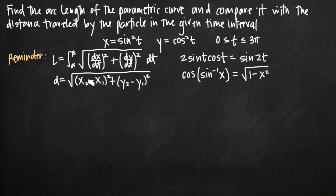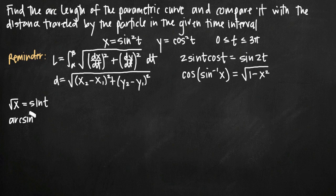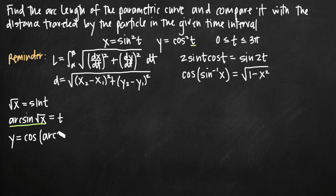To find the distance traveled by the particle, first we'll eliminate the parameter. We'll solve x equals sine squared t for t by taking the square root of both sides, giving us the square root of x on the left and sine of t on the right. Taking arcsine of both sides, we get arcsine of the square root of x equals t. Now we can plug this value for t into our equation for y, giving us y equals cosine squared of arcsine of the square root of x.